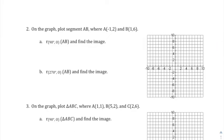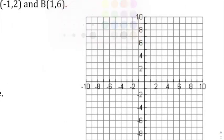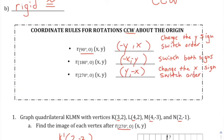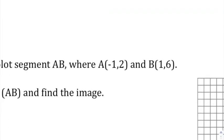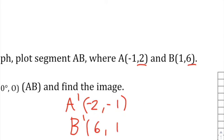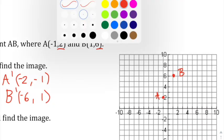On a graph, plot segment AB where A is (-1, 2) and B is (1, 6). For a 90-degree rotation, the rule is switch the order then change the original Y sign. So A prime: switch order to (2, -1), change original Y — A prime is (-2, -1). B prime: switch order to (6, 1), change original Y — B prime is (-6, 1). Plotting those shows the segment rotated 90 degrees counterclockwise.